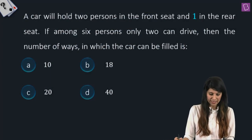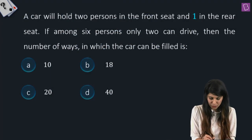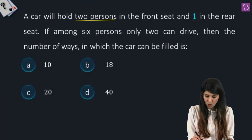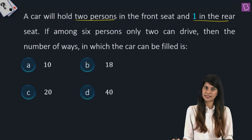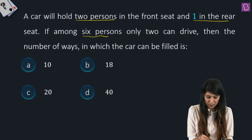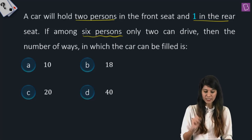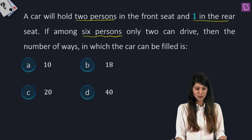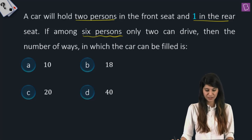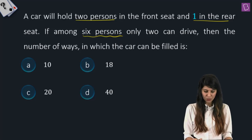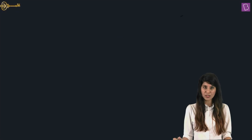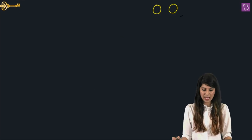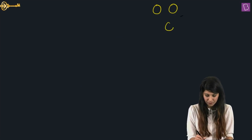In this question, it is given that a car will hold two persons in the front seat and one in the rear seat. If among six persons, only two can drive, then we need to figure out the number of ways in which the car can be filled. A car has two front seats and one back seat.